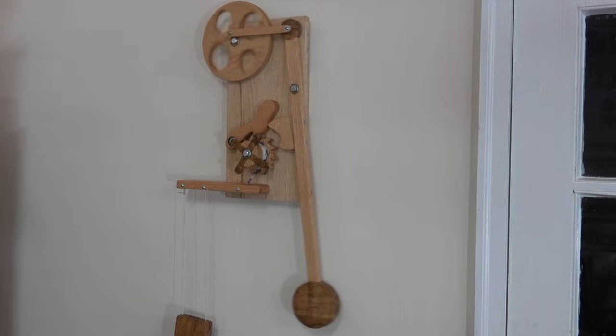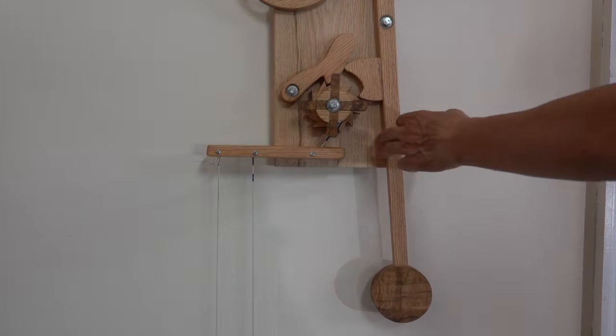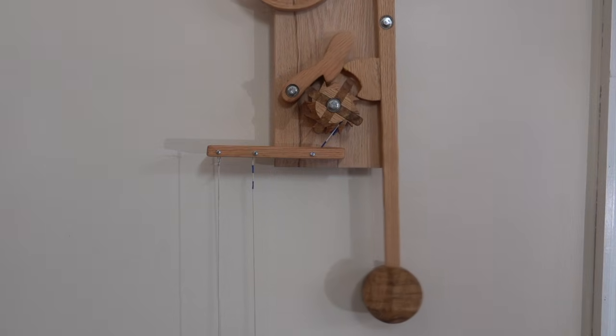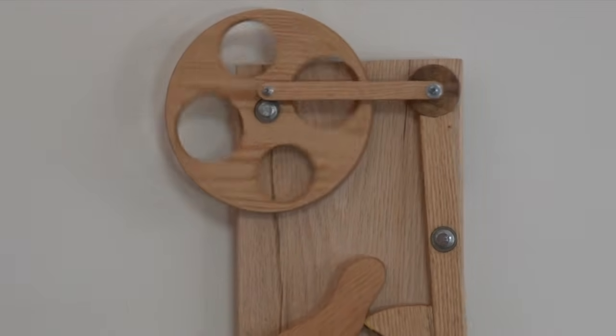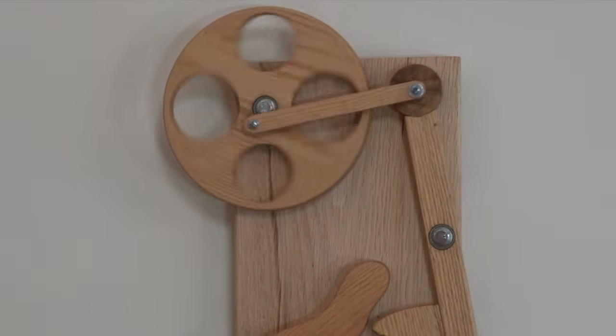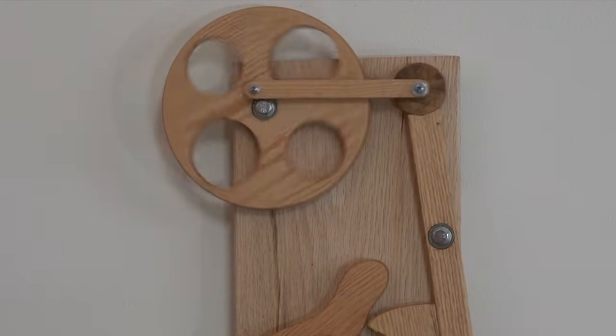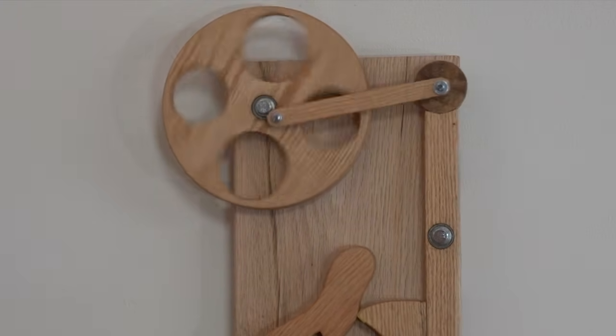We could also identify the pendulum arm as a lever. The lower part of the bar acts as the effort arm. The length of the bar above the pivot point is actually the resistance and it's transferring energy to that turning wheel.